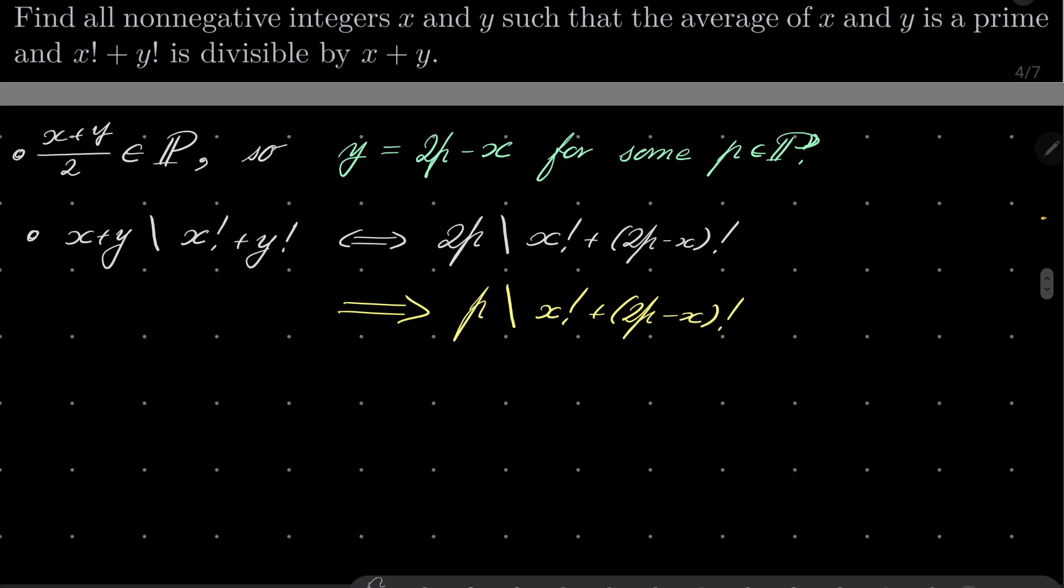Now I will consider three cases. Case number one, when our number x is 0, 1, and so on up to p minus 1. What then? Notice that then p does not divide x factorial because p is a prime and no number on this list is divisible by p.